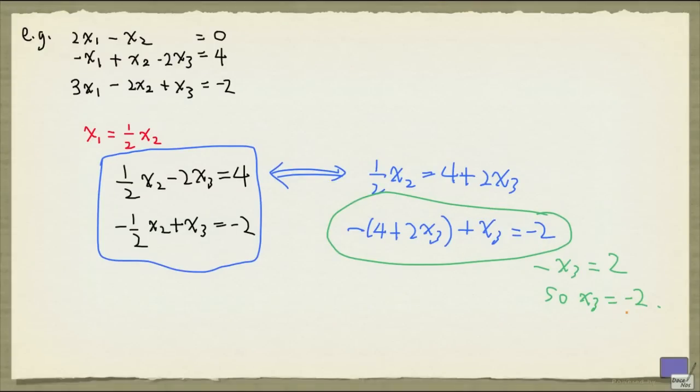But now, once I know what x3 is, I can get x2, because up here, half x2 is written as 4 plus 2 x3. So from here, I'm going to get x2 equal to 0. Now that I know x2 has to be 0, what does that tell me about x1? Well, x1 has to be 0 as well.